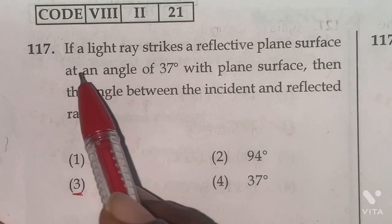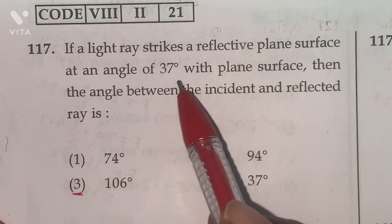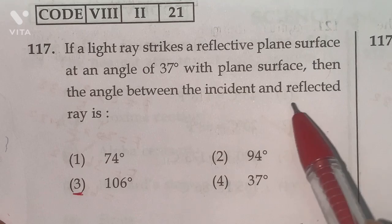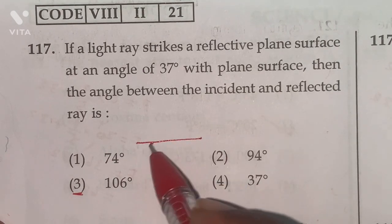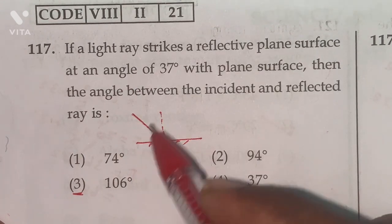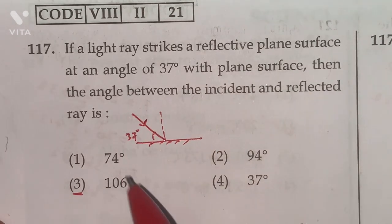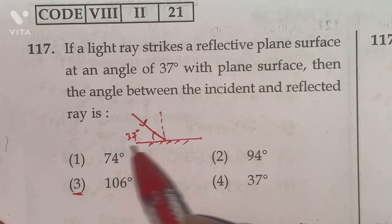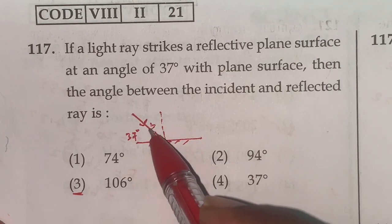117th. If a light ray strikes a reflective plane surface at an angle of 37 degrees with plane surface, then the angle between the incident and reflected ray is... Let us consider this is reflective plane surface. This is normal. Now light ray incident 37 degrees with plane surface. The angle between normal and this plane surface is 90. Total angle 90 to the 37 degrees is 53 degrees.